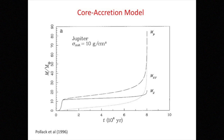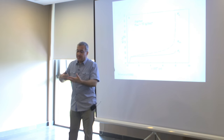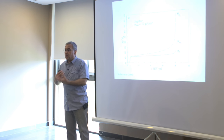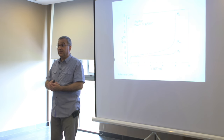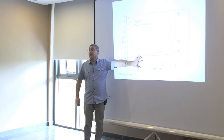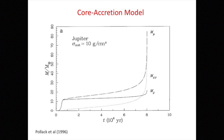The core accretion model can explain many properties of the solar system, but it has a major downside: look at the time — it's about 8–10 million years. But the gas necessary for this process does not stay around that long. Observations show that most disks maintain their gas for no more than 1.5 to 3 million years. So although this explains many properties of the solar system, the timescale is a problem. To make it work you have to speed up the process.